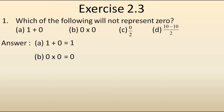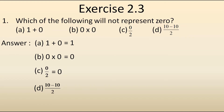Now let's check the third one: 0 upon 2. If we divide 0 by any number, we will get the answer as 0 only. So let's check the fourth one, that is 10 minus 10 upon 2. So 10 minus 10 gives 0, so 0 upon 2, and dividing 0 by any number gives 0.